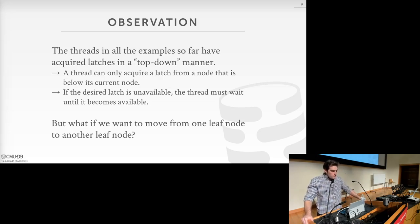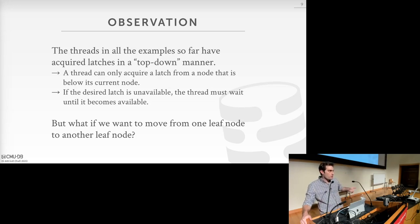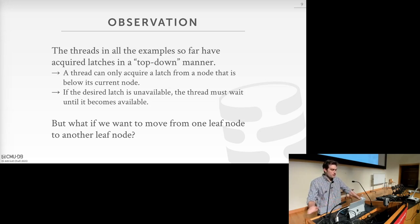In all examples — both pessimistic write latching and optimistic read latching — threads acquire latches in a top-down fashion. Similarly, in hash table examples, threads always scan in the same direction. For the B+ tree we always acquire latches starting from the root and traverse down. This algorithmically prevents deadlocks, because there's no deadlock detection or prevention — the only thing we can do is avoid deadlocks through careful algorithm design.